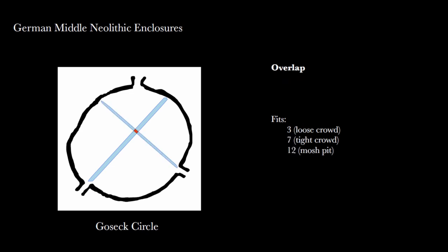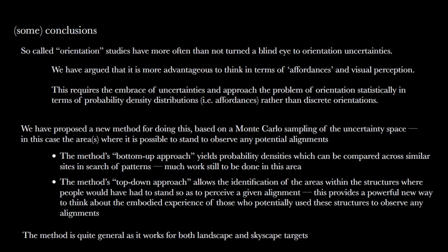Just to conclude: I think we need to rethink how we do orientation studies, and I think we need to think in terms of affordances and visual perception. We can do that methodologically through statistics and probability densities. This opens up the field to not only much more robust statistics on the one hand, but also thinking about the embodied experience of how these alignments would or would not have worked, which I think will put all these claims and hypotheses on much more stable and solid ground. Thank you.